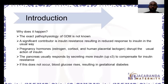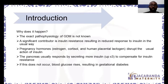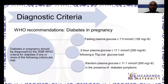Usually the pancreas will respond by secreting more insulin — because it's not working as well, it will produce more of it, sometimes up to three times as much. Sometimes this compensatory process does not work as described, and because the insulin is not working as well, the blood glucose will rise, resulting in gestational diabetes.